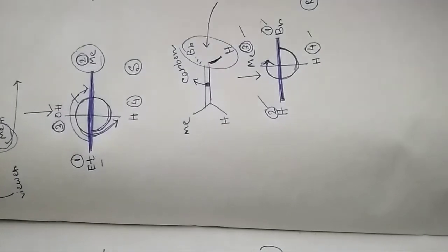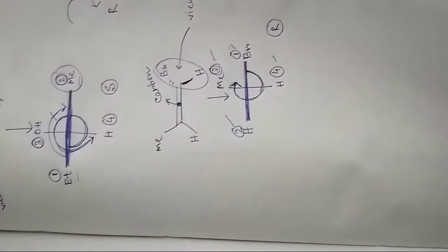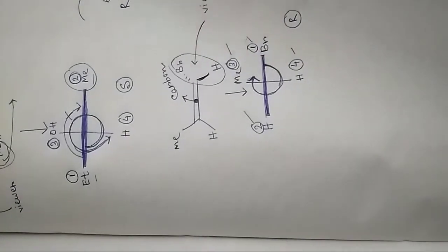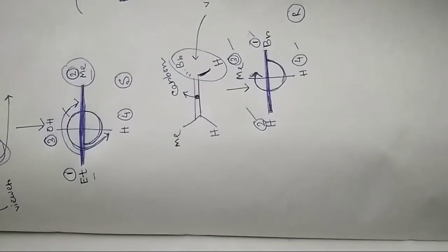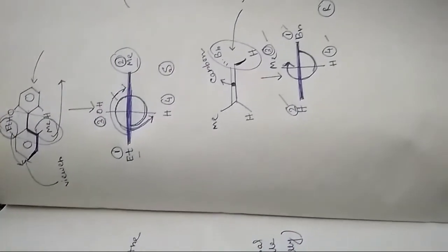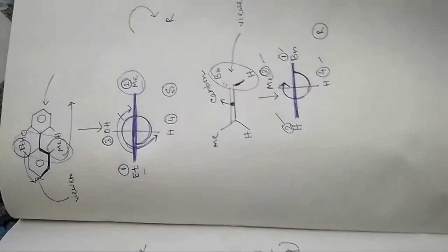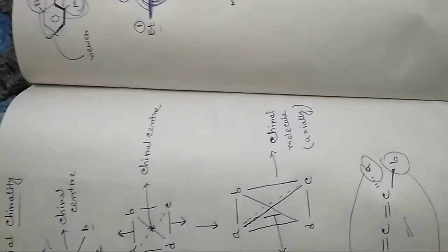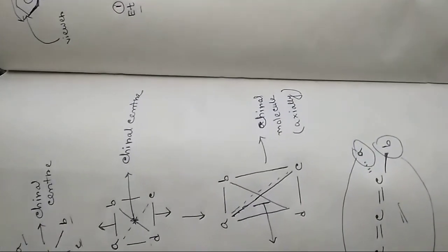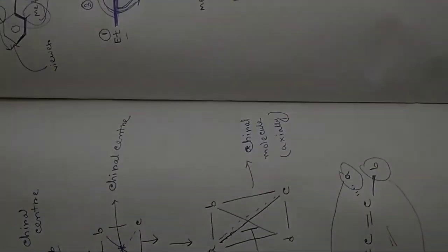In this way you can assign configuration to all molecules in which a chiral axis is present. After watching this video you can easily identify which molecule is R and which is S. If you liked this video, please like, comment, share, and don't forget to subscribe — it encourages us to upload more videos. Thank you.